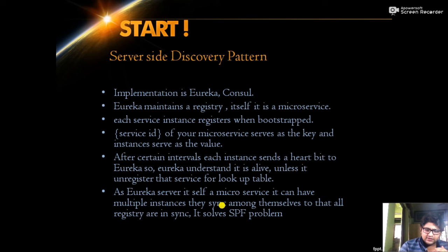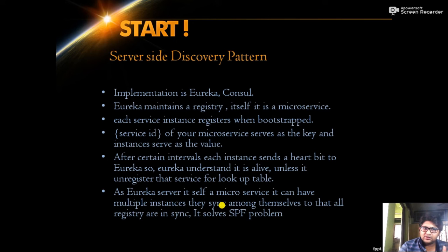Instances send a signal to the Eureka registry at frequent intervals to say they are alive — this is called a heartbeat. There is a certain time limit, and if the Eureka server does not receive a heartbeat from a particular instance within that limit, it treats that instance as down and removes it from the dynamic registry. In this way the dynamic registry is always up to date.